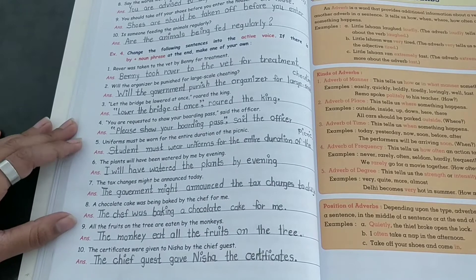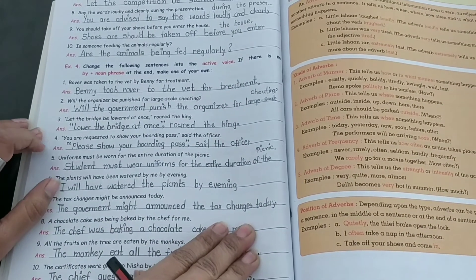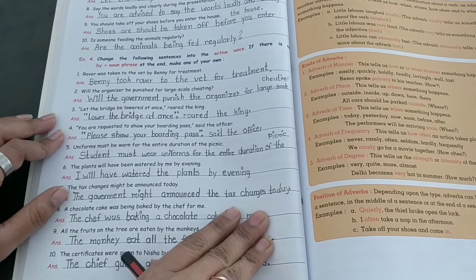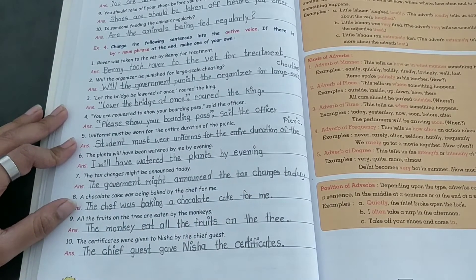Change the following sentence into the active voice. If there is no 'by' plus noun phrase at the end, make one of your own.